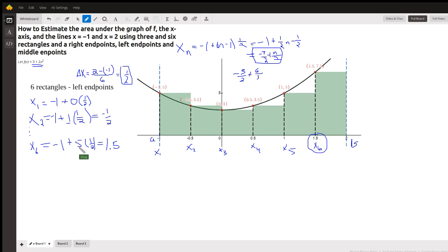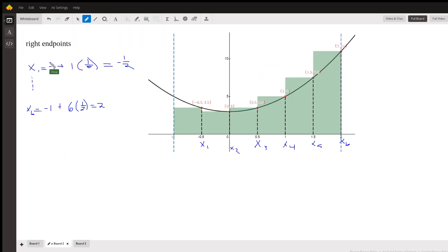And if you want to use right endpoints instead of x_1 equal negative one plus zero intervals, we're actually going to move to the right hand endpoint, so we'll add on one of these delta x's. And for x_6, we'll start at negative one and move six of these delta x's to get to the right hand endpoint, which is x_6.